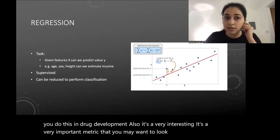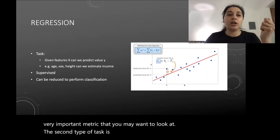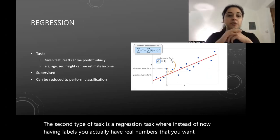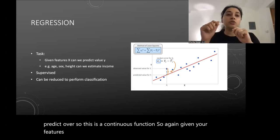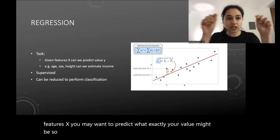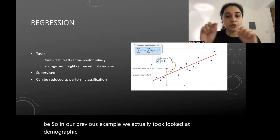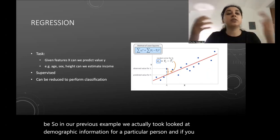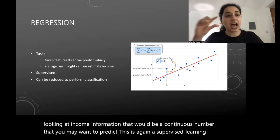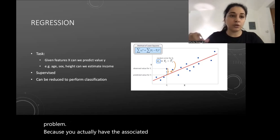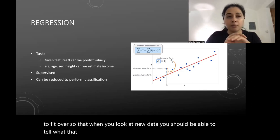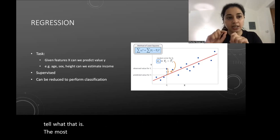The second type of task is regression, where instead of labels you want to predict real numbers — a continuous function. Given features X, you predict an exact value. In our demographic example, predicting income would be a continuous number. This is again a supervised learning problem because you have associated values to fit over, so that for new data you can predict the output.